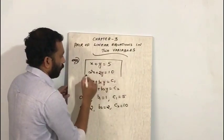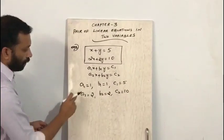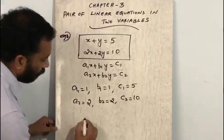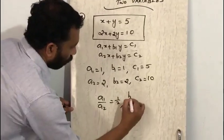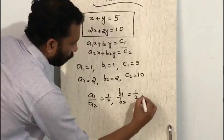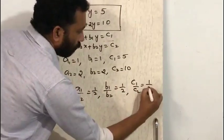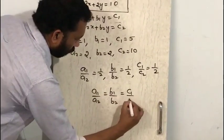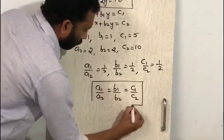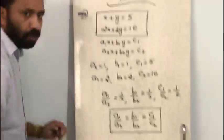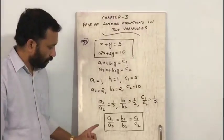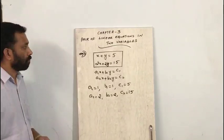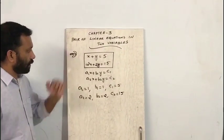For Example 2, we get: a1 equals 1, b1 equals 1, c1 equals 5, a2 equals 2, b2 equals 2, c2 equals 10. So a1/a2 equals 1/2, b1/b2 equals 1/2, and c1/c2 equals 5/10 equals 1/2. Since a1/a2 equals b1/b2 equals c1/c2, this is the condition for infinite number of solutions.